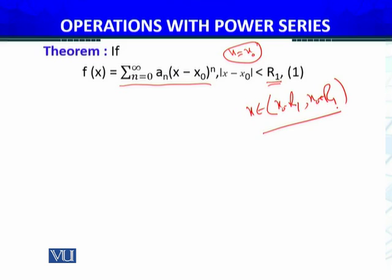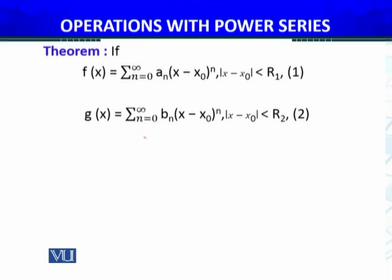Similarly, we have another function g of x. That function is also represented by a power series, another power series about the same point x equals x naught, but of course the coefficients are b_n, they are different. That's why here we write b_n not a_n. If a_n were written, then f of x equals g of x would happen. For that different power series, we have the radius of convergence r2.